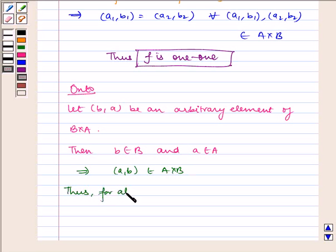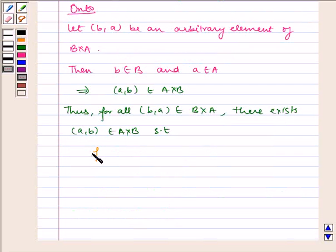Thus, for all (b,a) ∈ B×A, there exists (a,b) ∈ A×B such that f(a,b) = (b,a). So f: A×B → B×A is an onto function.